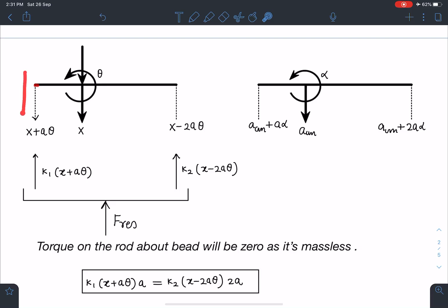This point will come down by x, and at the same time due to rotation, this length a·theta, or L·theta we can write. Let's say this is L, I have taken a, so x plus a·theta we can write here.